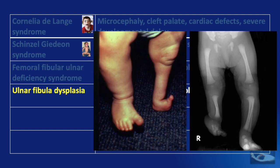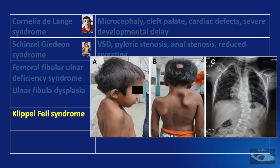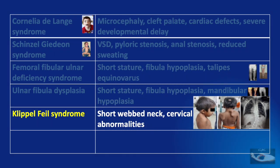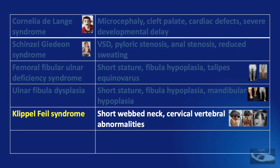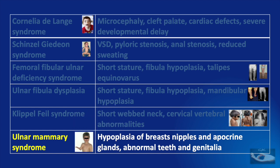In a condition called Ulnar fibula dysplasia, again there is short stature and fibula hypoplasia along with mandibular hypoplasia. When there is Klippel-Feil syndrome, Ulnar longitudinal deficiency may present with the characteristic features of short webbed neck and cervical vertebral abnormalities. The Ulnar club hand may also be associated with the Ulnar mammary syndrome, where there is hypoplasia of the breasts, nipples and apocrine glands and abnormal teeth and genitalia.